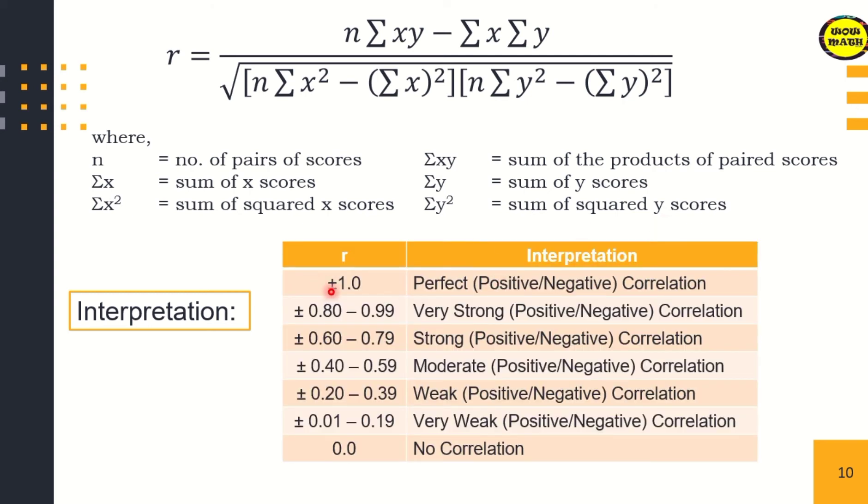How are we going to interpret the results? If your r is positive or negative 1.0, that is a perfect positive or negative correlation. If it's from positive or negative 0.80 to 0.99, that is a very strong positive or negative correlation. If it's positive or negative 0.60 to 0.79, that is a strong positive or negative correlation. If it's 0.0, that is no correlation. If positive or negative 0.1 to 0.19, that is very weak positive or negative correlation.